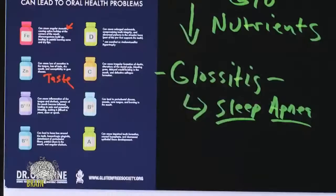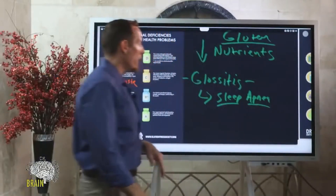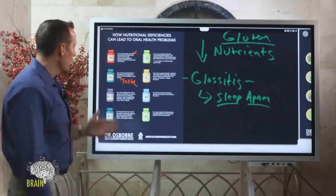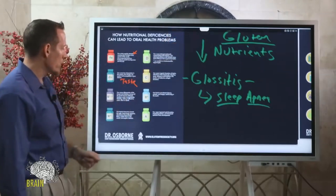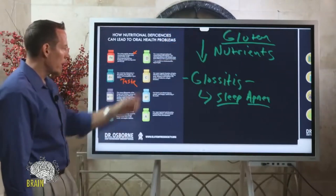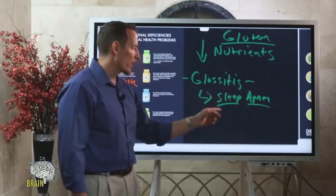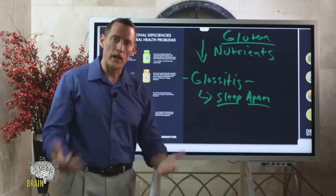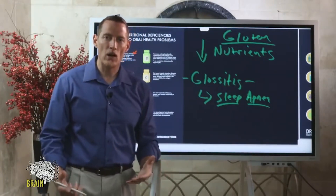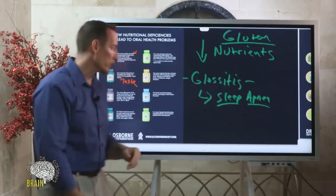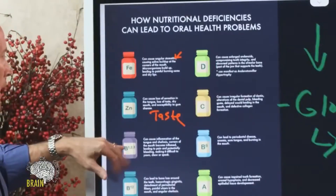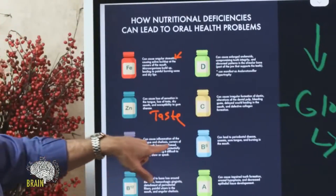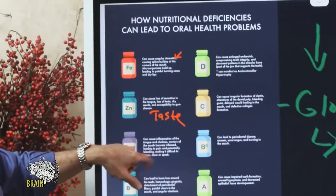Could that B vitamin deficiency be caused by gluten exposure? If so, the simple solution is to change your diet and nutrition. That might change your sleep, improve your energy, and help with weight loss. These are cycles.